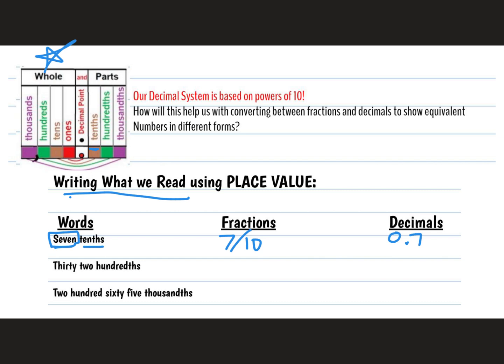Thirty-two hundredths. So again, the thirty-two, that's going to tell us our numerator, our top number. Hundredths, that tells us our denominator. And then as a decimal, again, thirty-two is going to end in the hundredths place, the second spot after the decimal. So thirty-two hundredths ends in the second spot after the decimal.